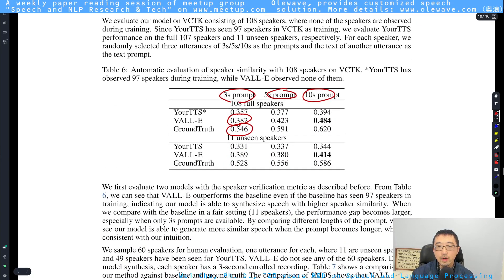And it's also very impressive that suppose this is ground truth with three seconds of prompt, you're going to get a similarity score of 0.5, but with only a three-second prompt, their proposed method can get a 0.4 similarity score. Remember, three seconds is very short in terms of zero-shot TTS.